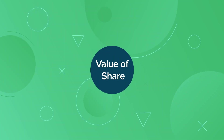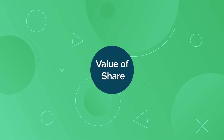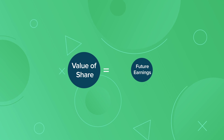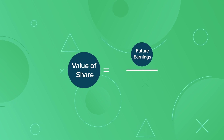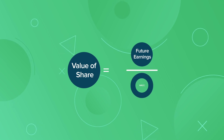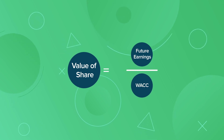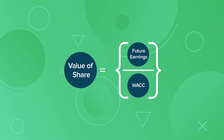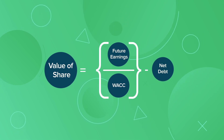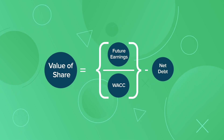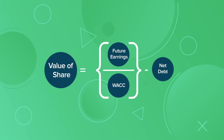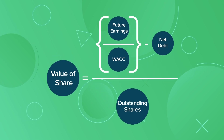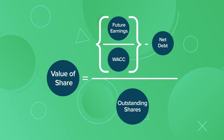To calculate the value of a share using the Discounted Cash Flow Model, add up the value of future earnings, then discount the earnings by the Weighted Average Cost of Capital, or WACC. Then subtract net debt from the enterprise value to compute the company's fair value and divide by the number of outstanding shares to calculate the value of a share.